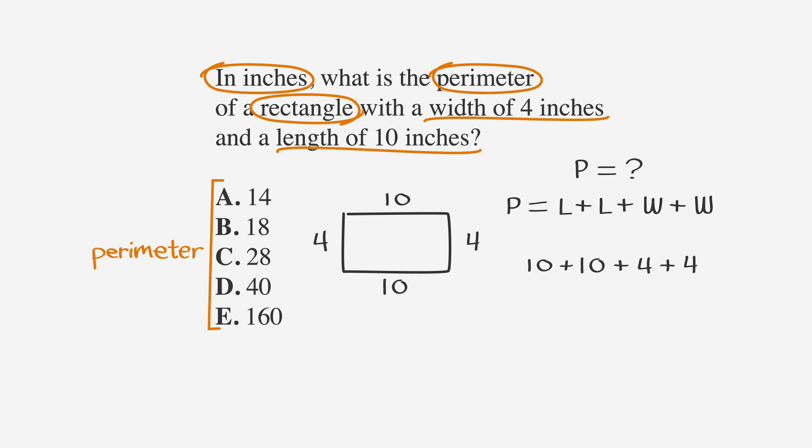Now, we simply add the sides. 10 plus 10 plus 4 plus 4. This gives us 28. Looking at the answer choices, answer choice C is 28 exactly. Circle that bad boy.